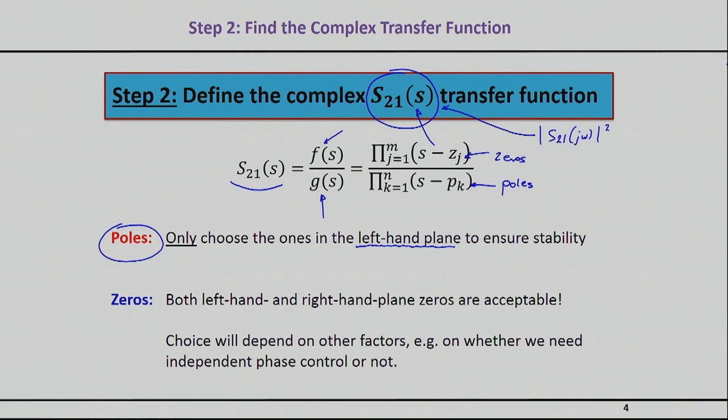On the other hand, zeros, we basically have far more flexibility. It turns out we can basically choose zeros both on the left-hand plane as well as on the right-hand plane. And which zeros you basically choose out of all the possibilities depends on whether you want to achieve an independent control of phase from magnitude.